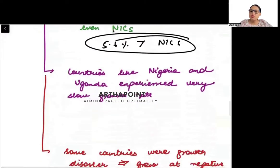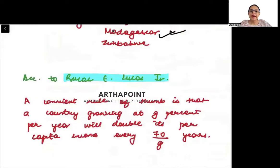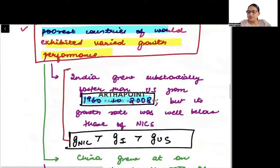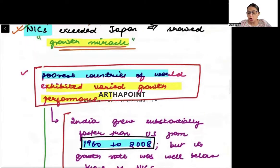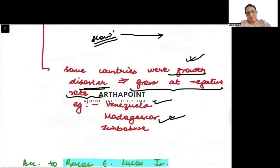And if you talk about some other countries like Nigeria, we see that the growth rate was very slow. And some countries had growth disasters, they were growing at negative rate, like Venezuela, Zimbabwe, etc. What has been seen is that the growth story of each country has been very different. Some countries have done very well called as growth miracles and some countries have done very poorly called as growth disasters.